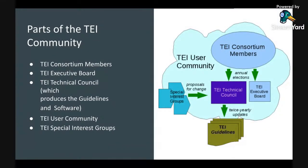This gives you a sense of the parts of the TEI community itself. It consists of an executive board, a technical council — which mainly deals with guidelines and software issues — as well as a wide array of users in the academy, archives, and libraries. There are also special interest groups which deal with particular issues that the TEI is looking toward expanding in their guidelines.